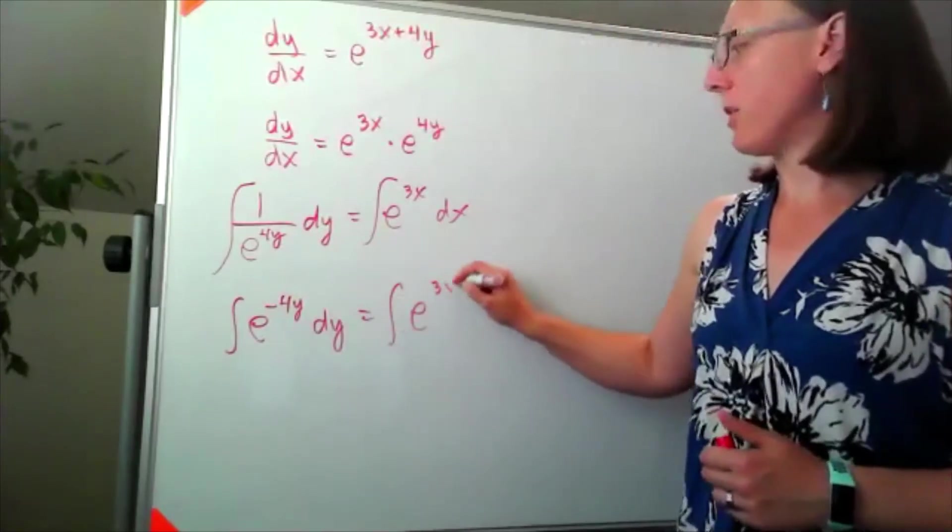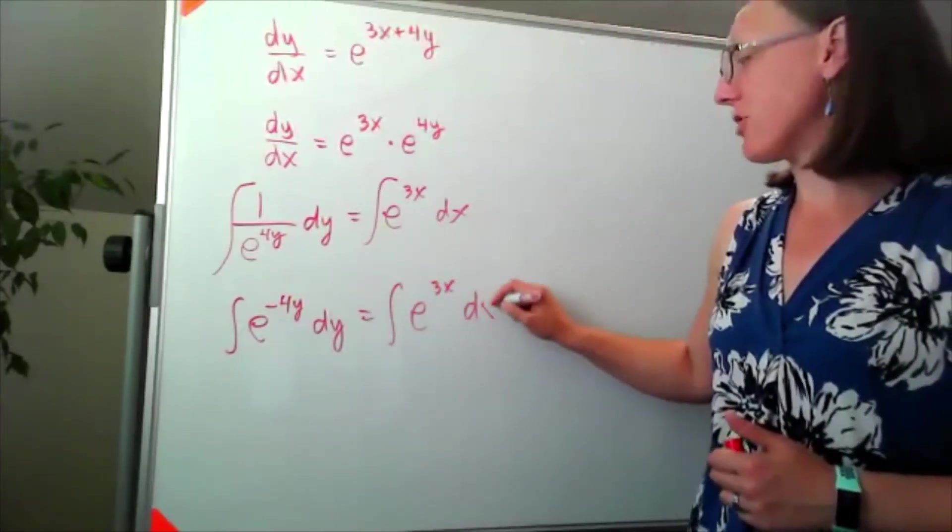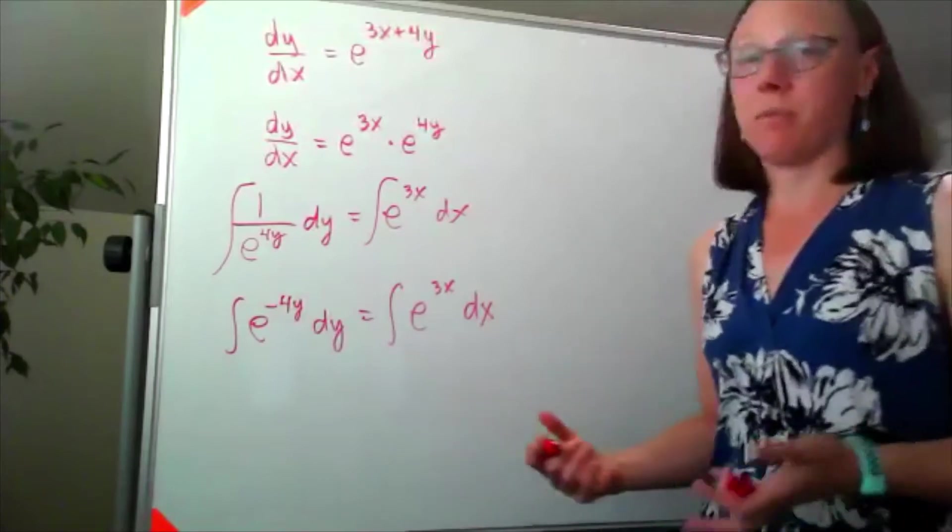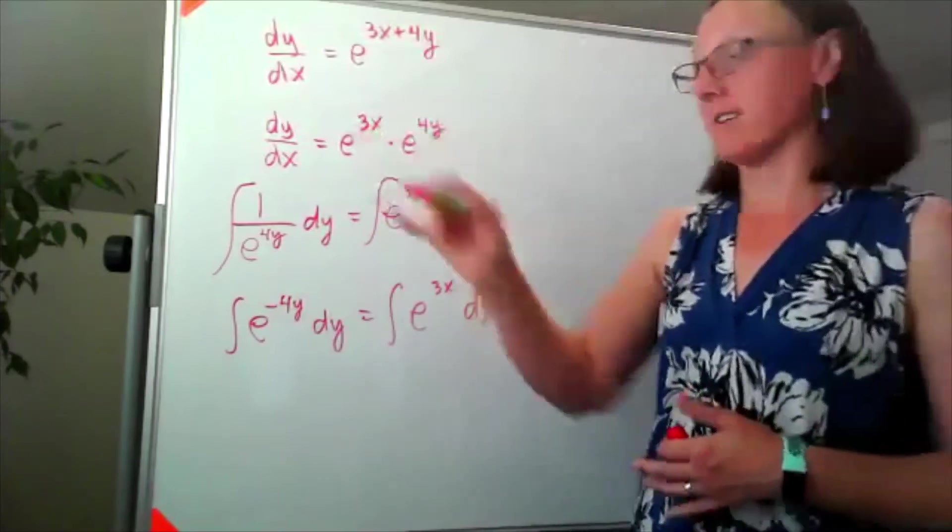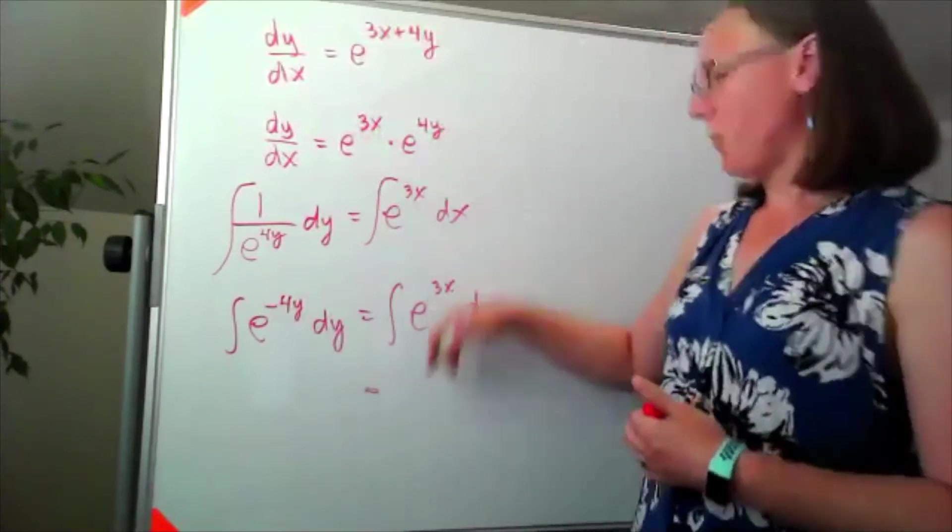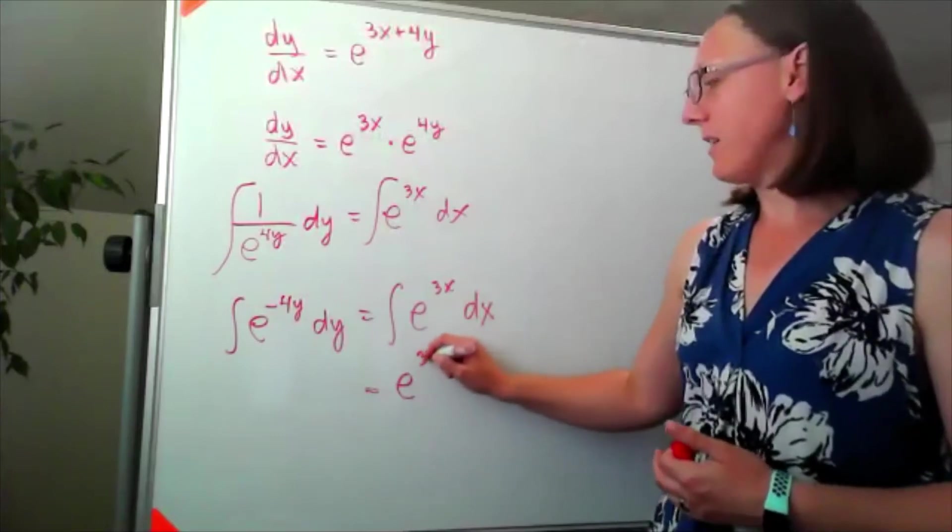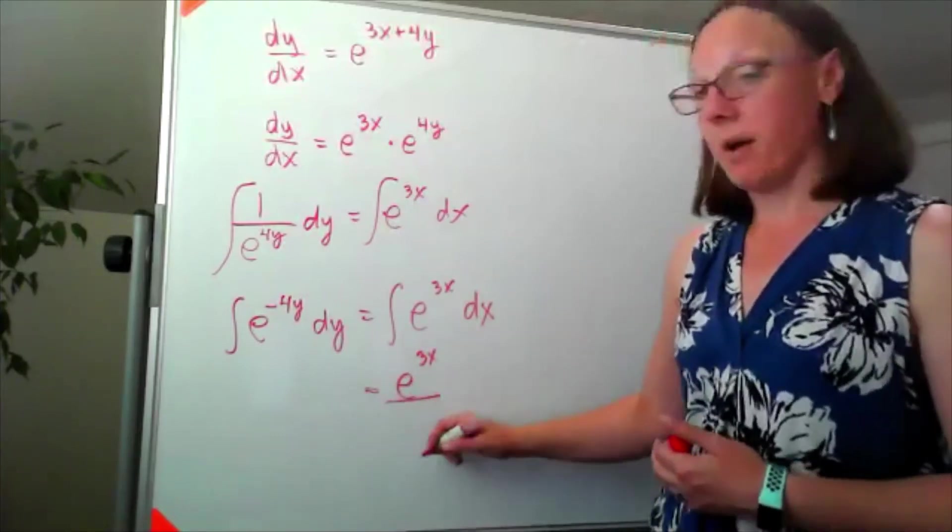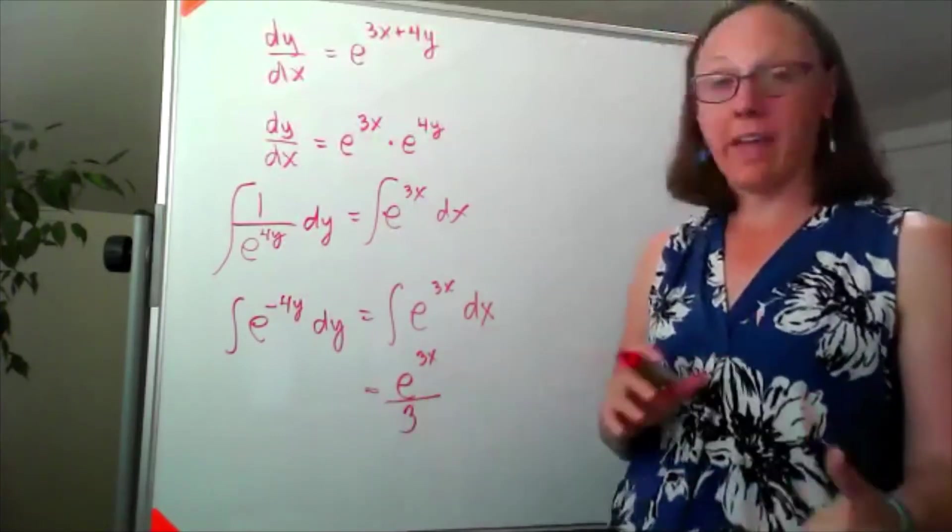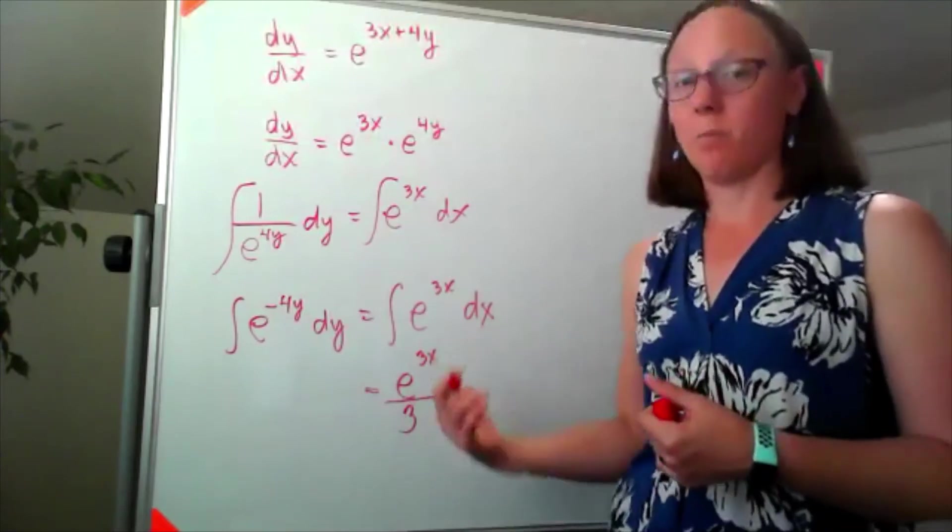Then I'm going to be able to use our general antiderivative rule on both sides for something that looks like e to a constant times x. So my antiderivative here is going to be e to the 3x dividing by that 3 to account for the chain rule that happens when we take the derivative.